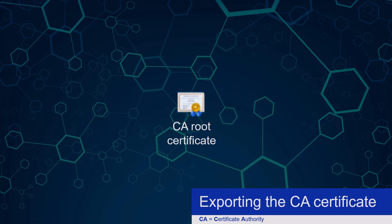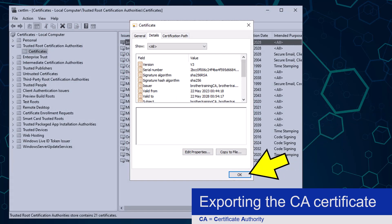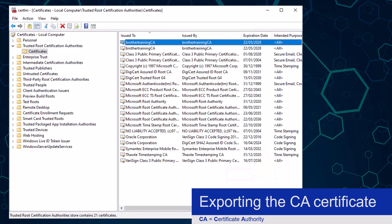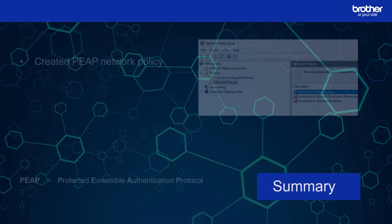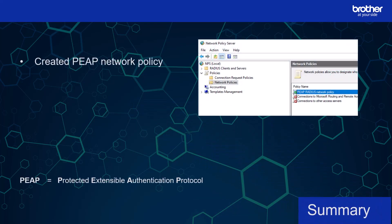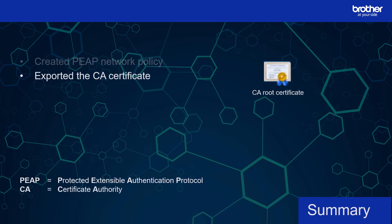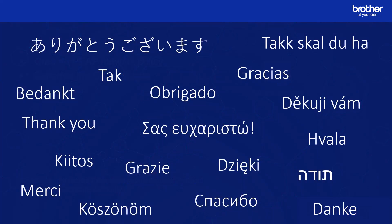The exported CA certificate will now be exported and look something like this. To finish, I need to click the OK button, which will return me to the Local Computer Certificate store. I can now close it and move on. To summarize: first I created a PEEP Network Policy in Windows Network Policy Server NPS. I then exported the CA certificate in order to help demonstrate Zero Trust, which I will do in the next video. A link to it is now on the screen. Thank you for watching.